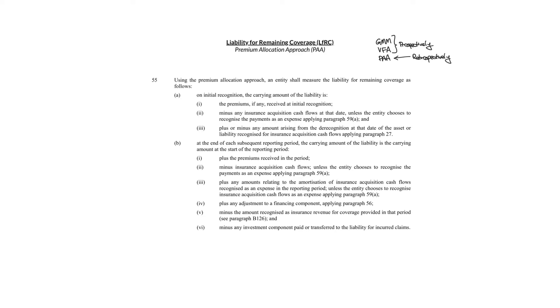What is the liability for remaining coverage? The liability is really the obligation for the insurer to pay or to fulfill before the insured event has actually occurred. Under the premium allocation approach, the standard specifies how you measure this liability on initial recognition and at the end of each subsequent reporting period. What's important to note is that at initial recognition and on subsequent reporting periods, any premiums that come in actually increase the liability.